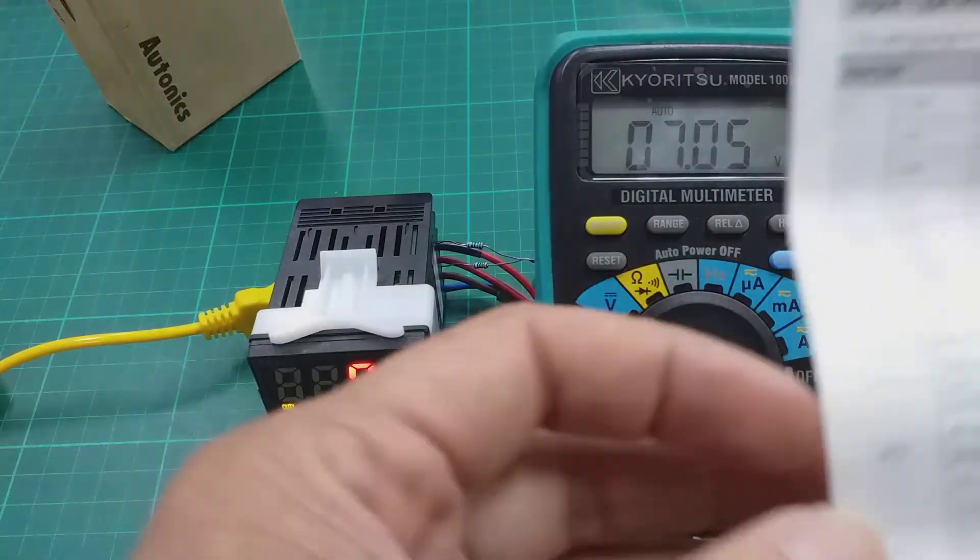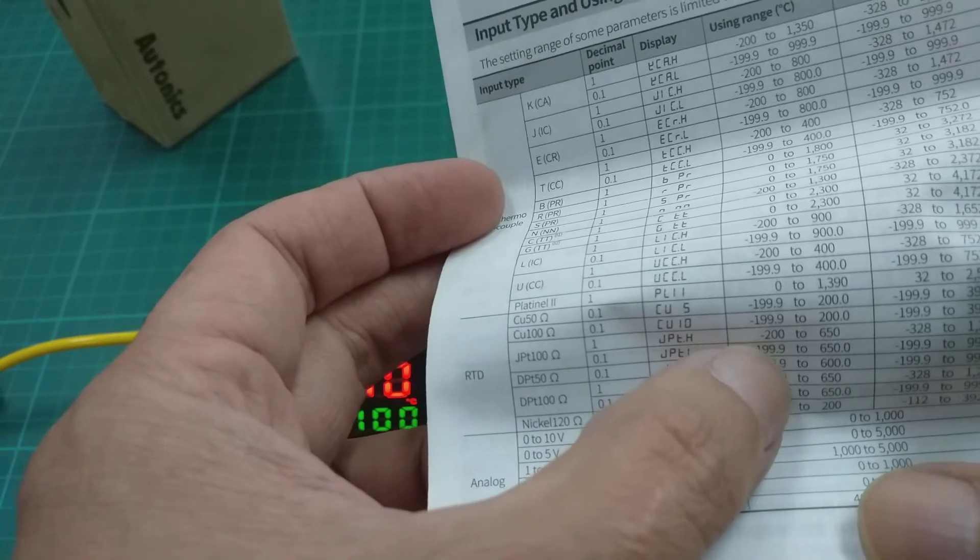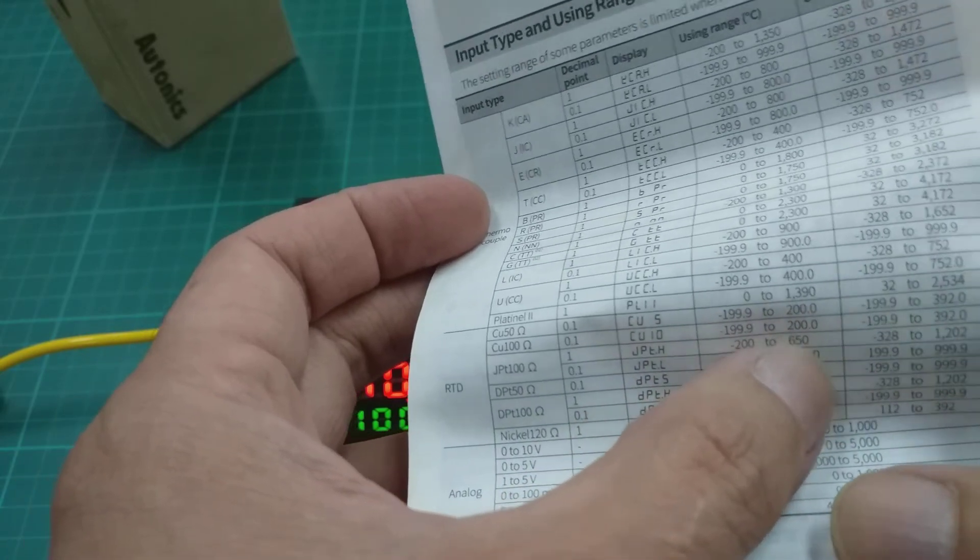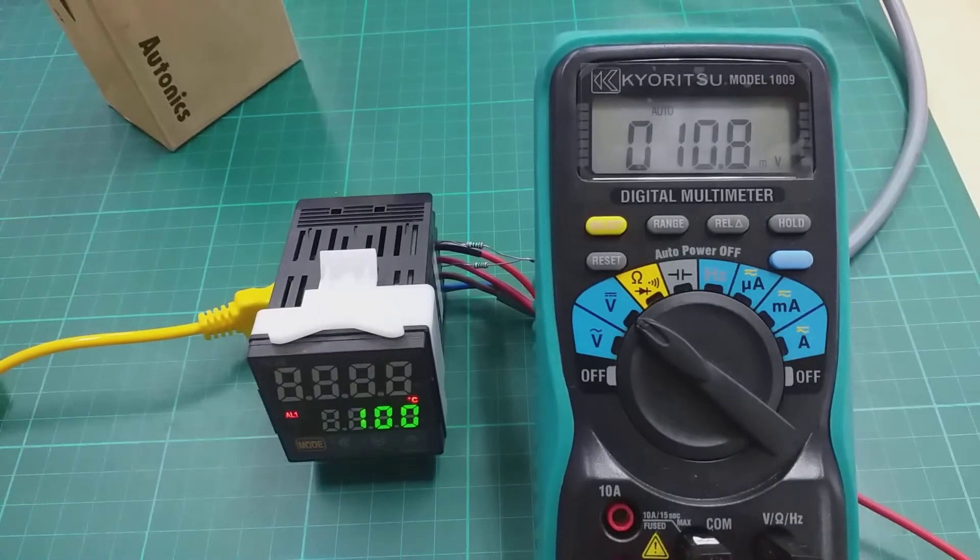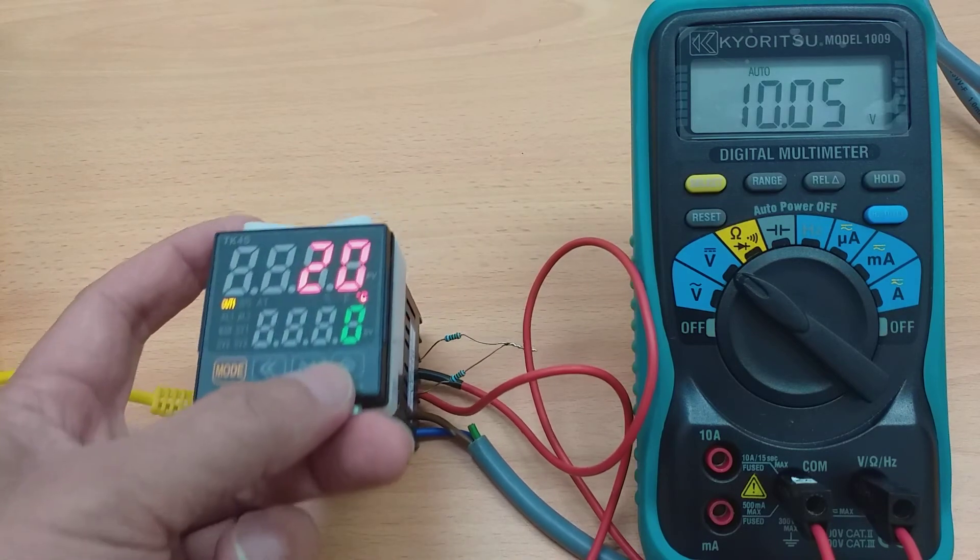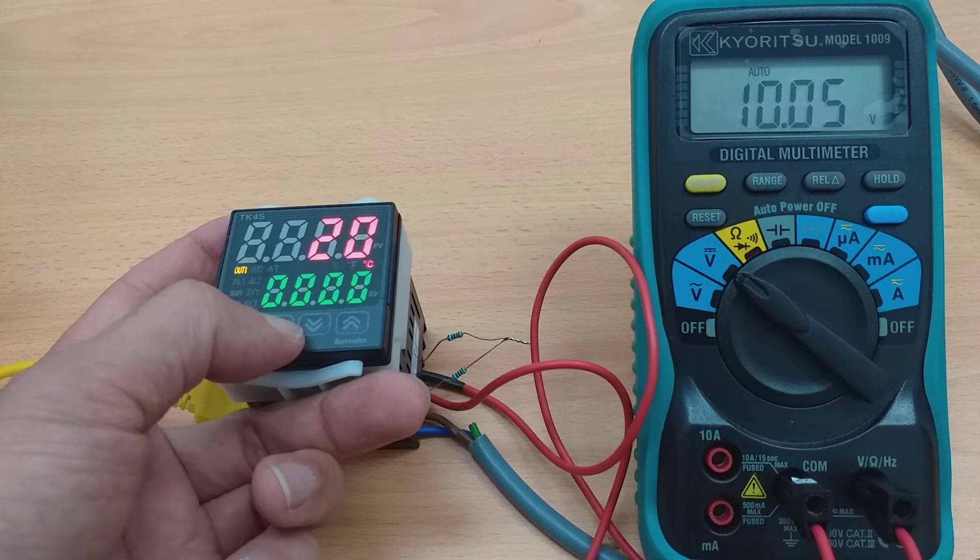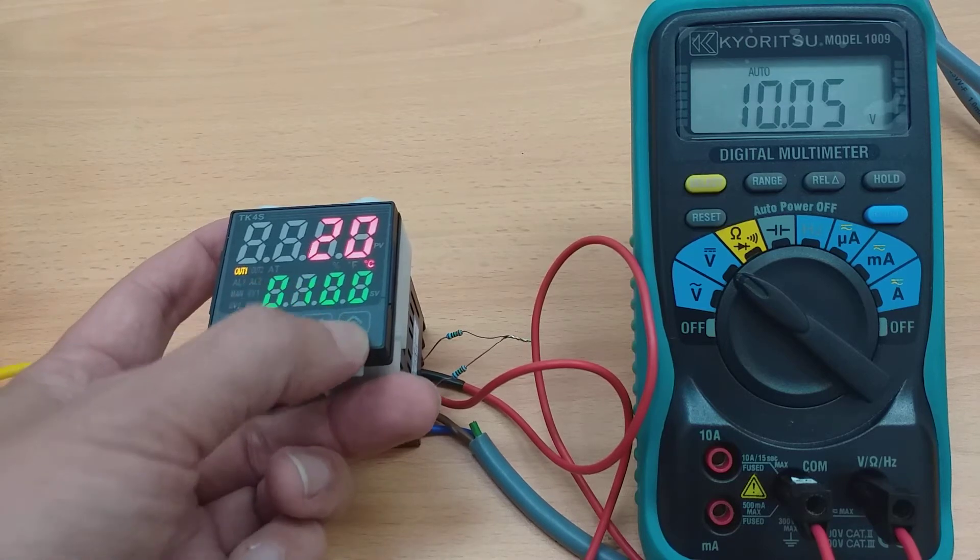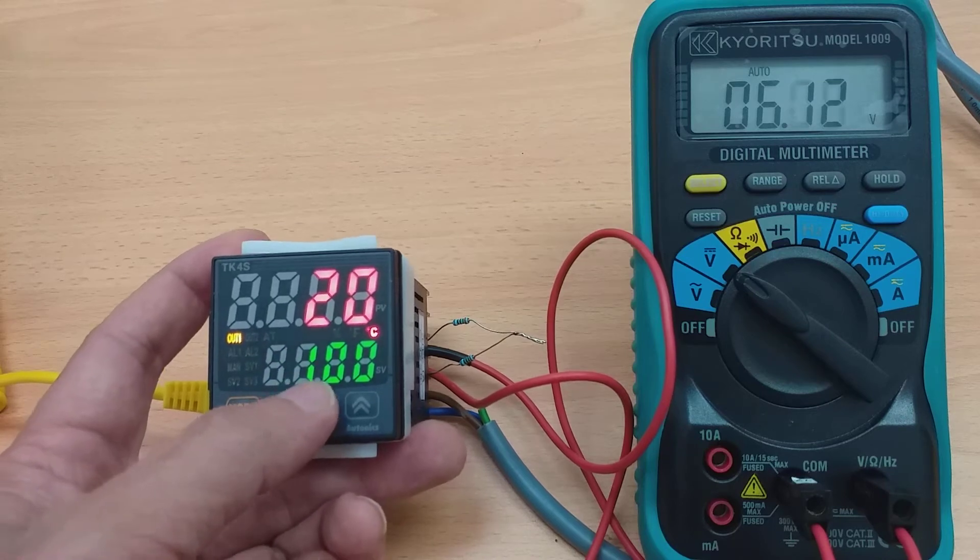The set for RTD is PT100, JPTH divided to 100 to 650. Now, first you need to set, key in your set value. As I put, I use as 100. 100, press mode, 0, 100.